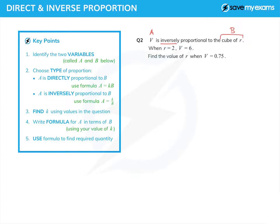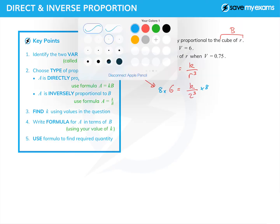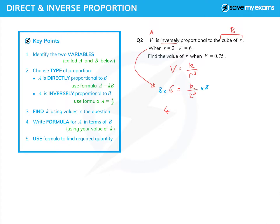V is equal to k over r cubed - that's the formula a equals k over b with my a and b. Put the values in: r equals 2 and v equals 6, and I get 6 equals k over 2 cubed. Well, 2 cubed is 8, so multiply both sides by 8 and I get k equals 48.